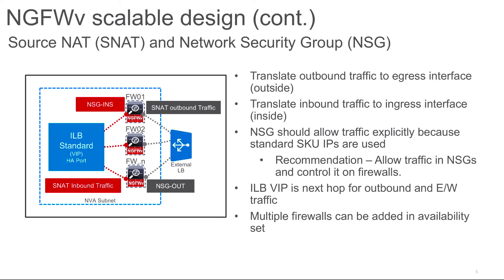When you deploy firewalls in this model, we recommend allowing everything in your NSG and controlling traffic on your security appliance. We don't want double rule inspection — once on the NSG and once on the firewall. Also, if you deploy firewalls in an availability set and use ILB Standard, you should explicitly allow traffic in your NSGs. For outbound traffic, it is source NAT'd on the outside interface of the firewall.